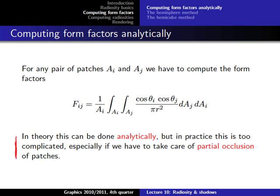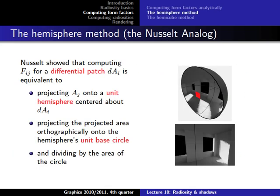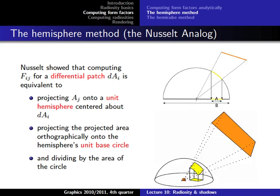There's also the partial occlusion problem, making things even more complicated. But we don't have to solve the integral directly — there is another way called the Nusselt analog. It's analogous because it produces exactly the same result via a different method. The idea is: project a patch onto a unit hemisphere centered around the receiving patch, then project the projected area orthographically to the hemisphere's unit base circle.